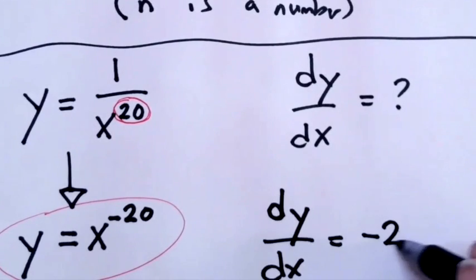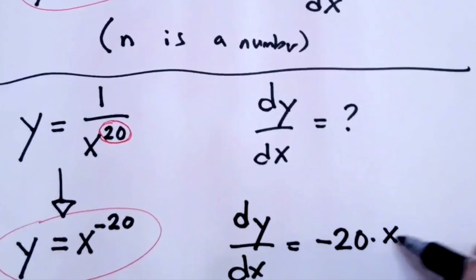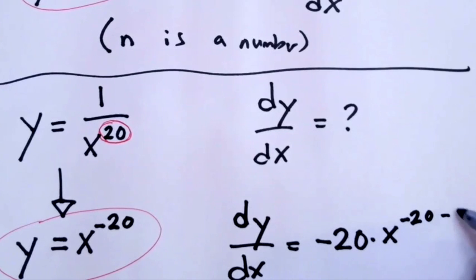bring down the power: negative 20 times x to the negative 20 minus 1. Now be careful, negative 20 minus 1 is negative 21, not negative 19.